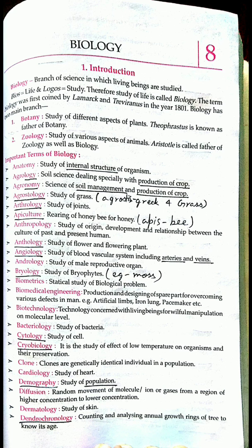Sericulture is the rearing of silkworms for silk. Anthropology is the study of human race. Anthology — 'antho' means flower — so anthology is the study of flowering plants.